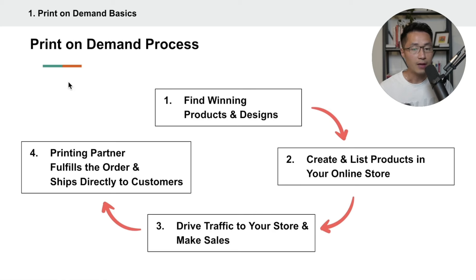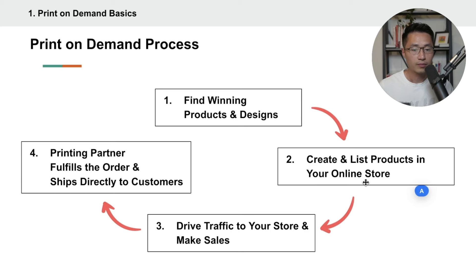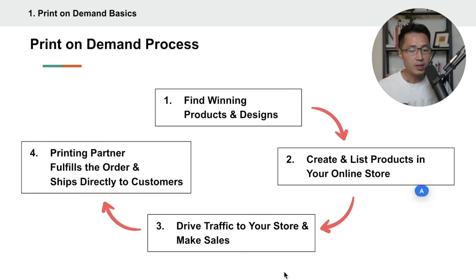Here we're going to look at the print-on-demand process. There are basically four main steps in the entire process. Your first main objective is to find winning products and designs, then create and list those products in your online store. After you have your products listed, you want to drive traffic to your store so you can make sales. After a sale is made, your printing partner will fulfill the order on your behalf and ship the items directly to your customers.